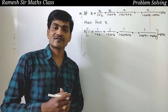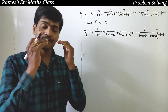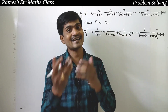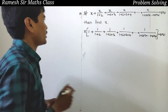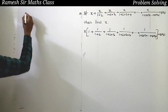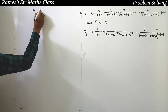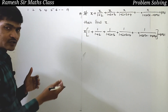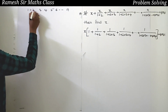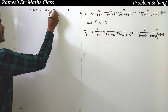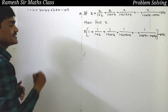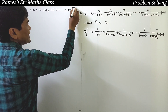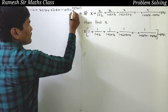Here we have a concept of the sum of first n natural numbers: 1 plus 2 plus 3 plus 4 plus 5 and so on plus n. The formula is n(n+1)/2.